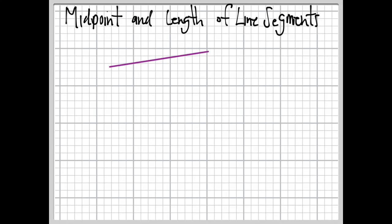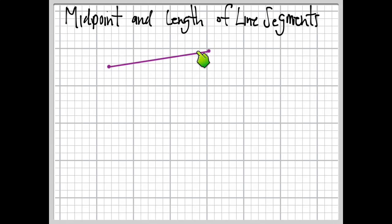Here's a nice line segment. A line segment is a part of a line. Lines go on forever in either direction, but a line segment is the part of the line between two endpoints, such as these little dots here. It's the part of the line including those two endpoints and all the points in between.